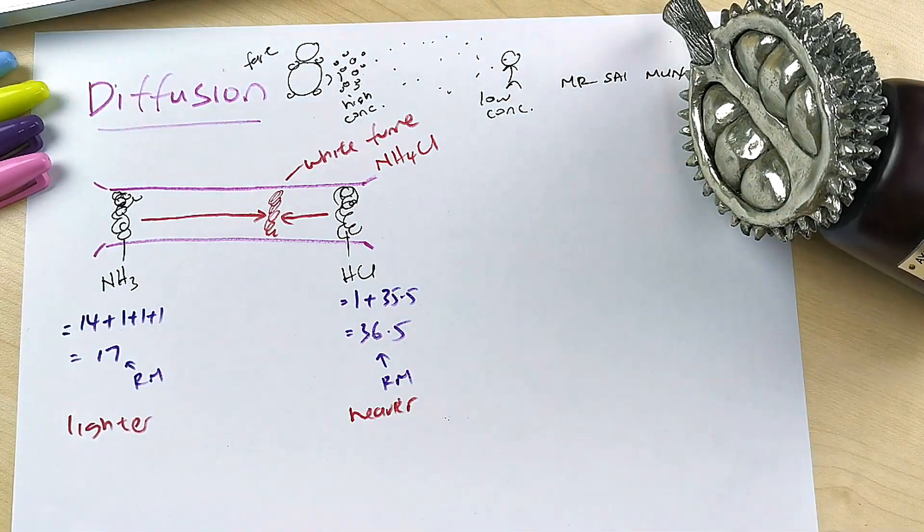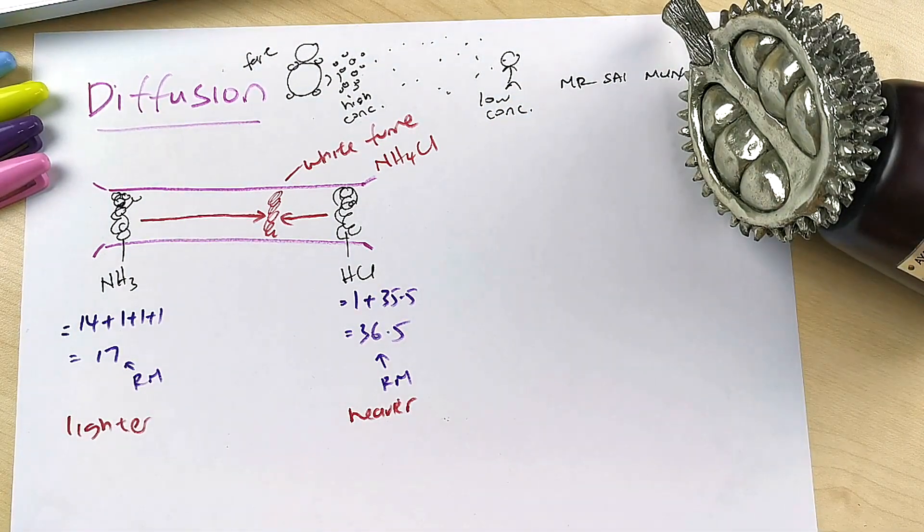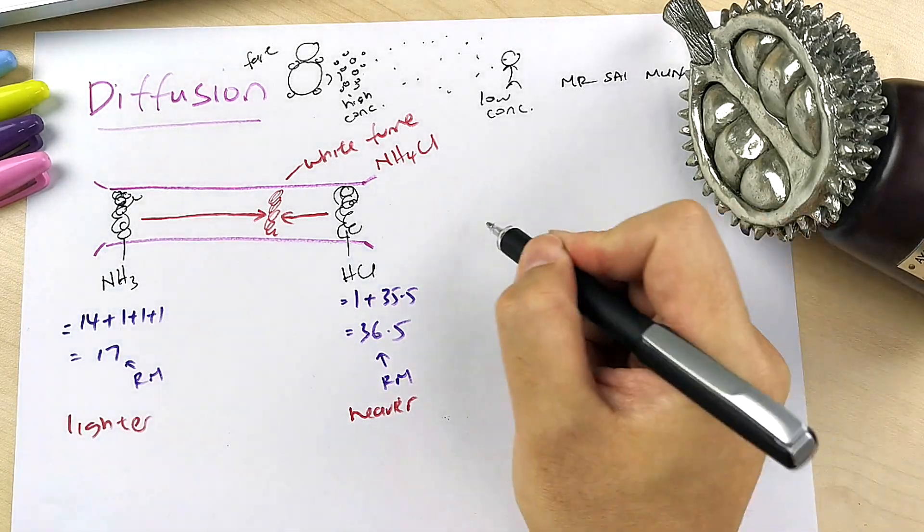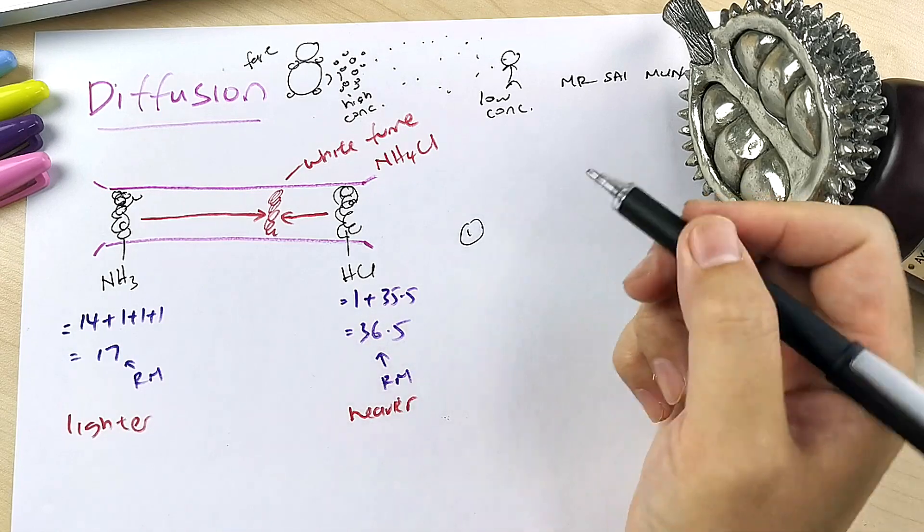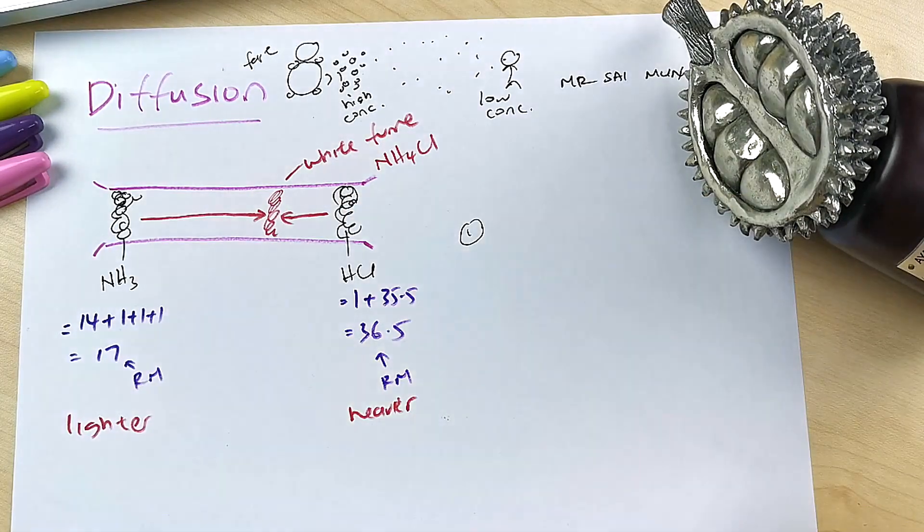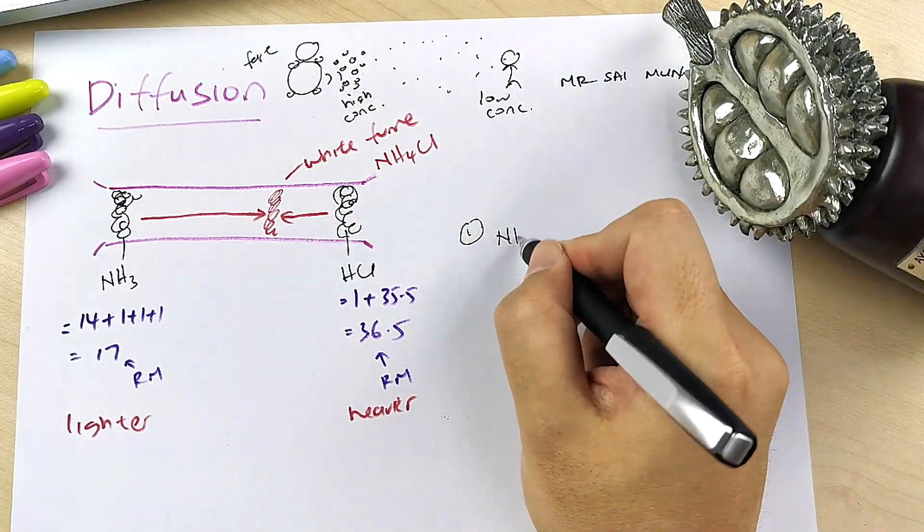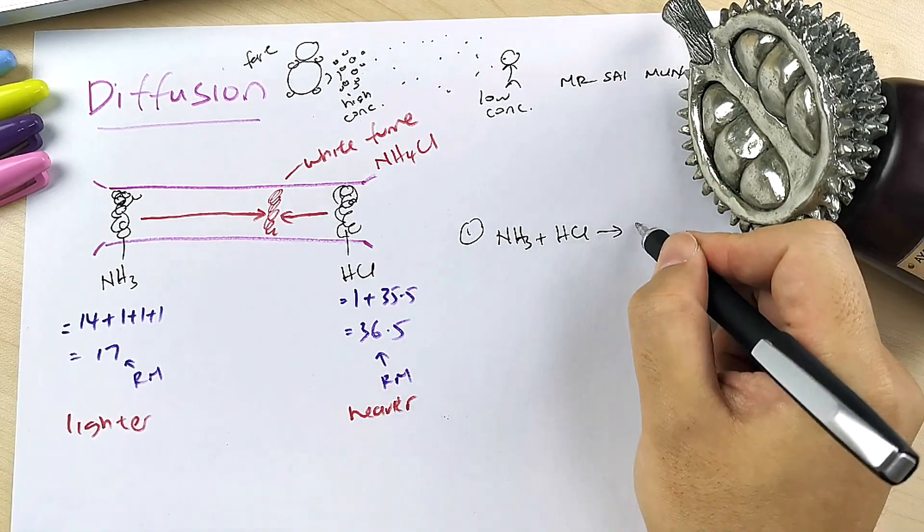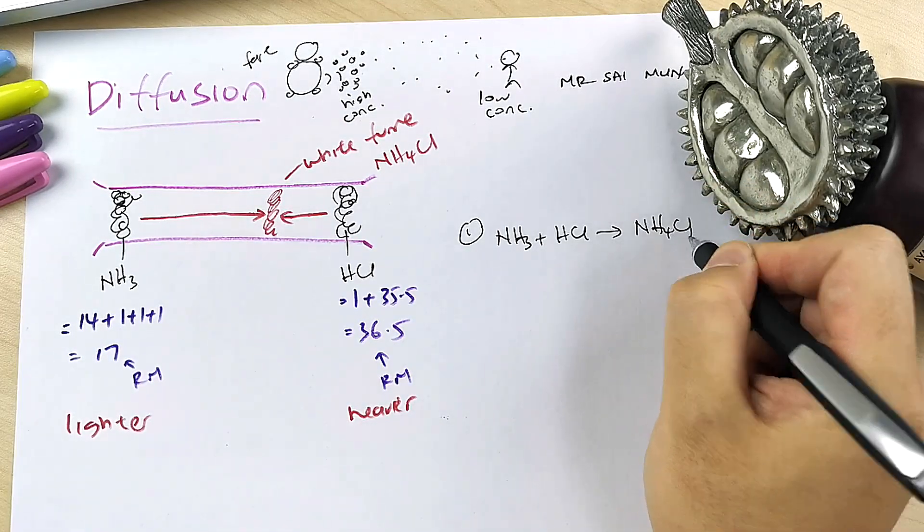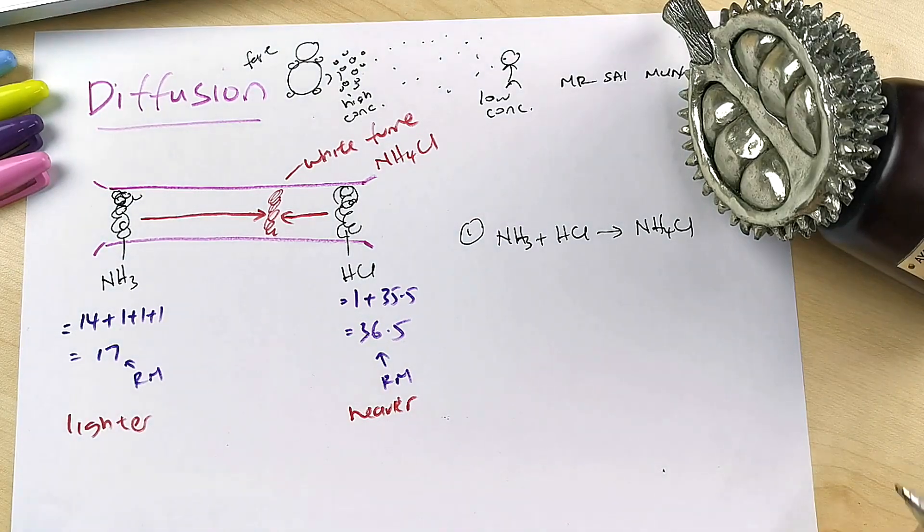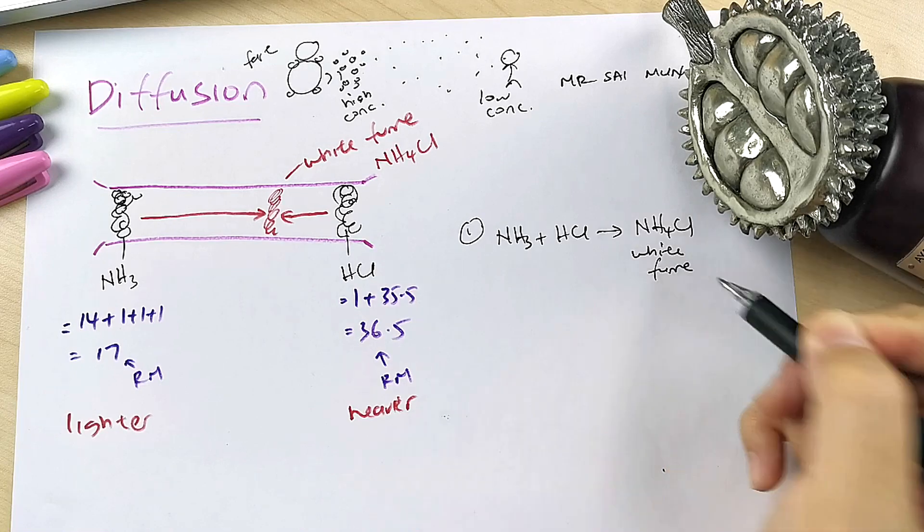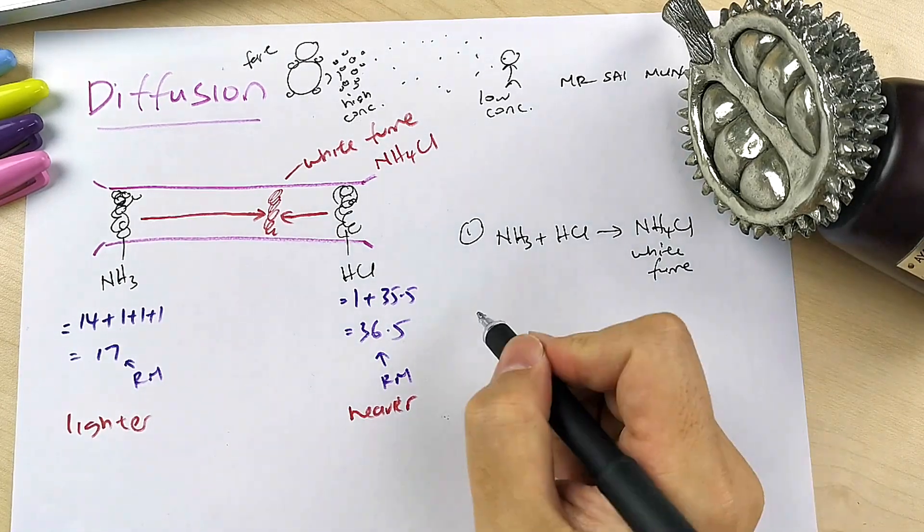So there are a few things. See, this empty space here is for you to understand further. If they ask, number one, write the equation of this reaction. So it will be ammonia NH3 plus HCl becomes ammonium chloride. So then ammonium chloride, what is the observation? White fume.